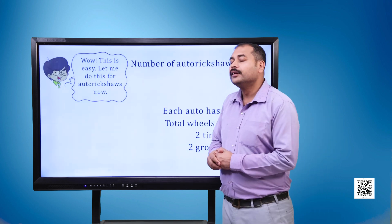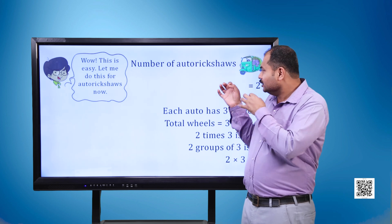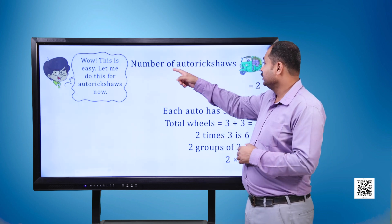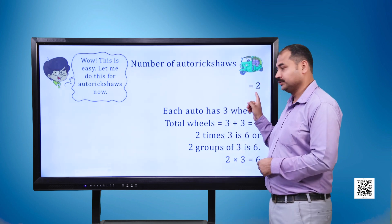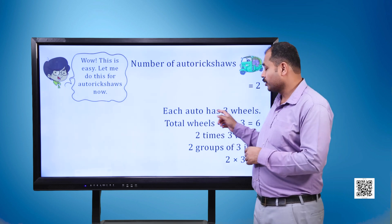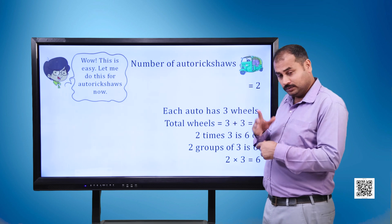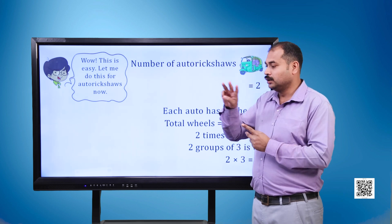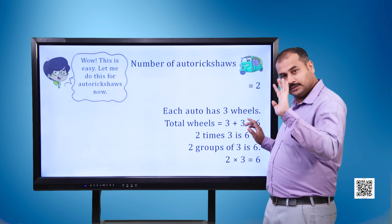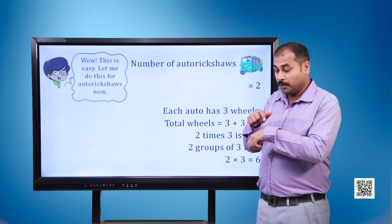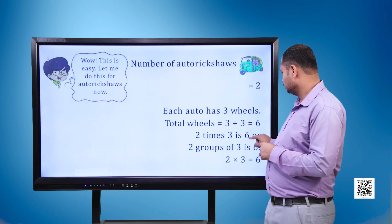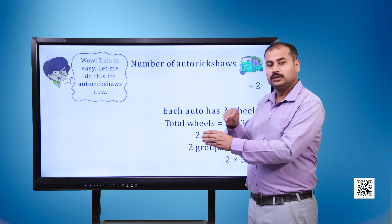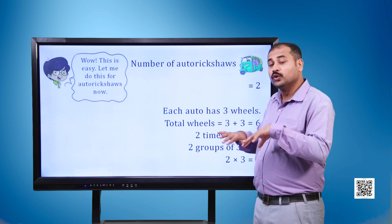The boy says, 'Wow, this is easy! Let me do this for auto rickshaws now.' Number of auto rickshaws is equal to 2. Each auto has 3 wheels. Total wheels is equal to 3 plus 3, which equals 6. So 2 times 3 is equal to 6, or 2 groups of 3 is 6. 2 multiplied by 3 is equal to 6. 2 into 3 is equal to 6.